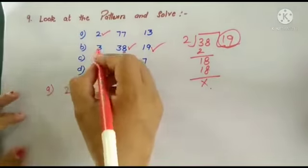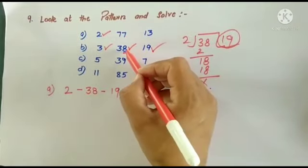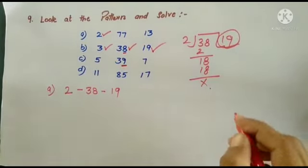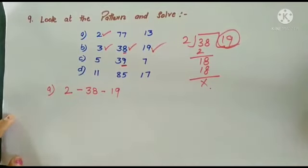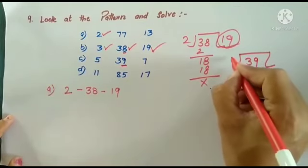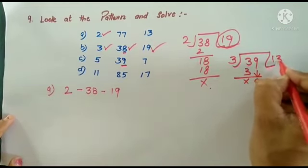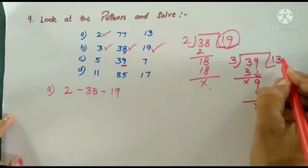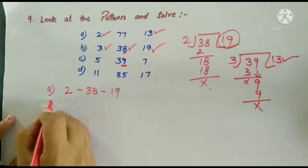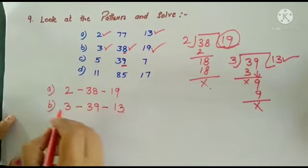Now let us take 3. Look at 3 — look at the last, which goes in 3's table? 9 is going. 9 comes in 3's table. So now we have to divide this too. Divide 39 with 3: 3 ones are 3, 3 threes are 9. So now what is coming? 13. So this means we will take this now. So what will our Part B be? 3, 39, 13.